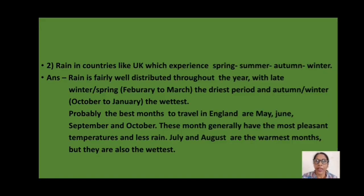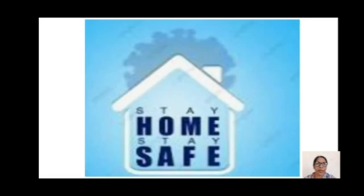2. Rain in countries like UK which experience spring, summer, autumn, and winter. Rain is fairly well distributed throughout the year, with late winter and spring — February to March — the driest period, and autumn and winter — October to January — the wettest. Probably the best months to travel in England are May, June, September, and October, as these months generally have the most pleasant temperatures and less rain. July and August are the warmest months but they are also the wettest. With this, we end our session. Stay home, stay safe. Thank you.